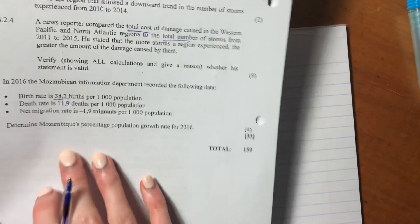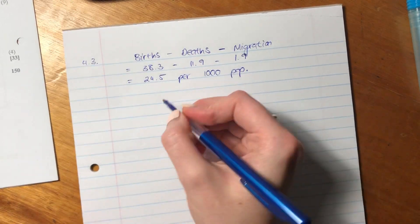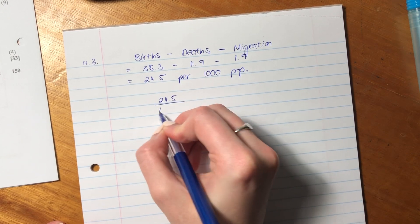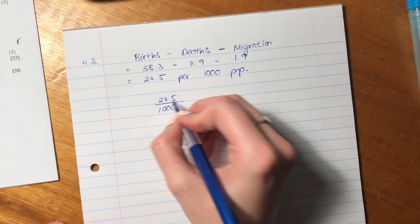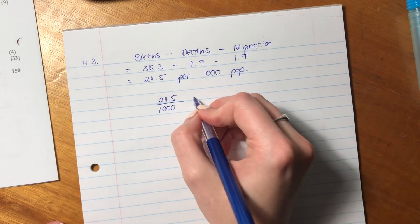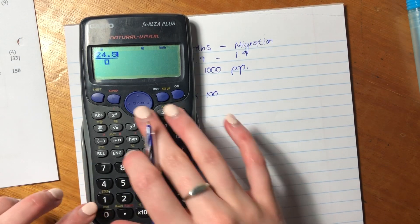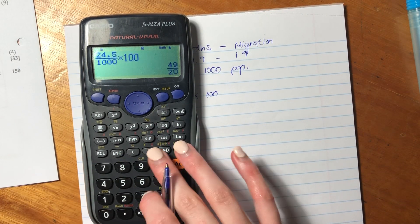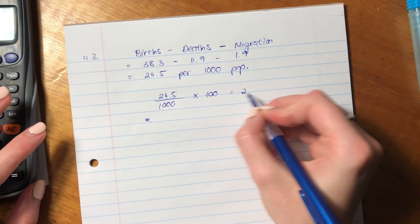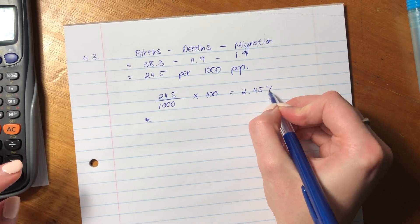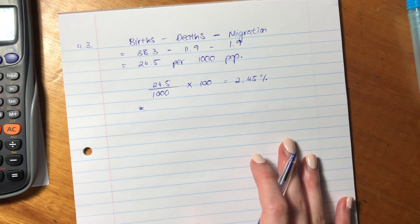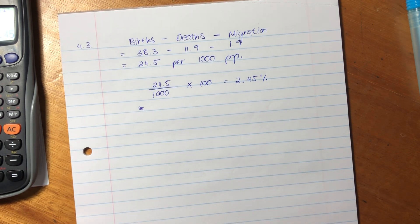But it's asked us for a percentage, so that's not a percentage yet. How do we do a percentage? Well, we write this as a fraction. So our growth rate is 24.5 over 1,000. To get a percentage, we times by 100. Let's put that into our calculator. And that is 2, 2.45 percent. So this was just testing whether you understand what migration means, death, births, and how those all integrate together. So that is the end of this paper, guys. I hope that was helpful, and good luck for your exam.